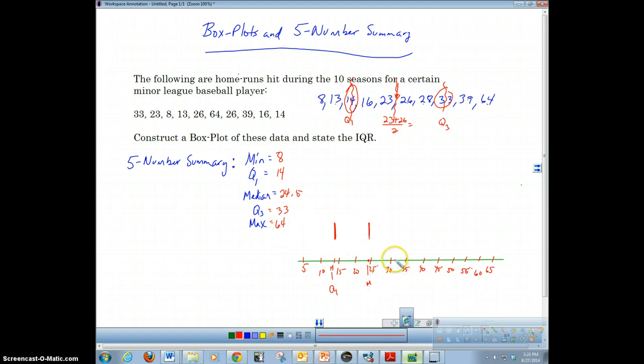We're going to draw a line at our Q1, which is 14. Then we're going to go to our median at 24.5. Then we're going to go to our Q3, which is 33. Then we're going to connect those and we've got our box, which is going to tell us our IQR. We know that our IQR is Q3 minus Q1, so in this case, our IQR is 33 minus 14, which gives us 19.